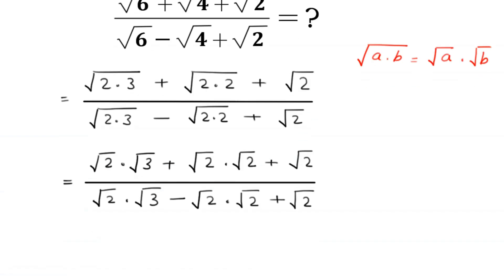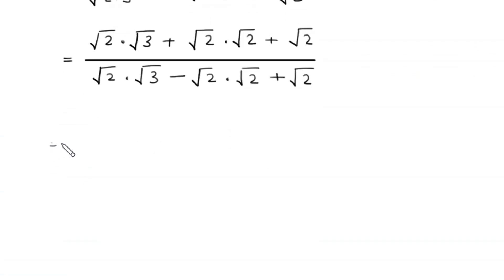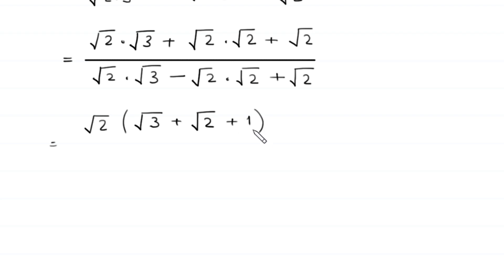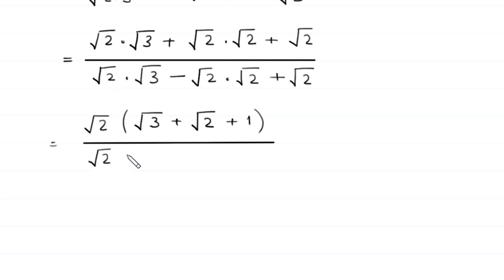Next, from the numerator we can factor out square root of 2 as a common factor, leaving in brackets square root of 2 plus square root of 3 plus square root of 2 plus 1. From the denominator we can also factor out square root of 2 as a common factor, leaving in brackets square root of 3 minus square root of 2 plus 1.